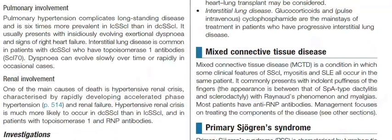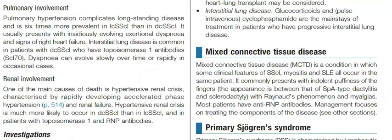Interstitial lung disease is common in patients with diffuse cutaneous systemic sclerosis who have topoisomerase 1 (Scl-70) antibodies. Dyspnea can evolve slowly over time or rapidly in occasional cases. One of the main causes of death is hypertensive renal crisis, characterized by rapidly developing accelerated-phase hypertension and renal failure. Hypertensive renal crisis is much more likely to occur in diffuse cutaneous systemic sclerosis than in limited cutaneous systemic sclerosis, and in patients with topoisomerase 1 and RNP antibodies.